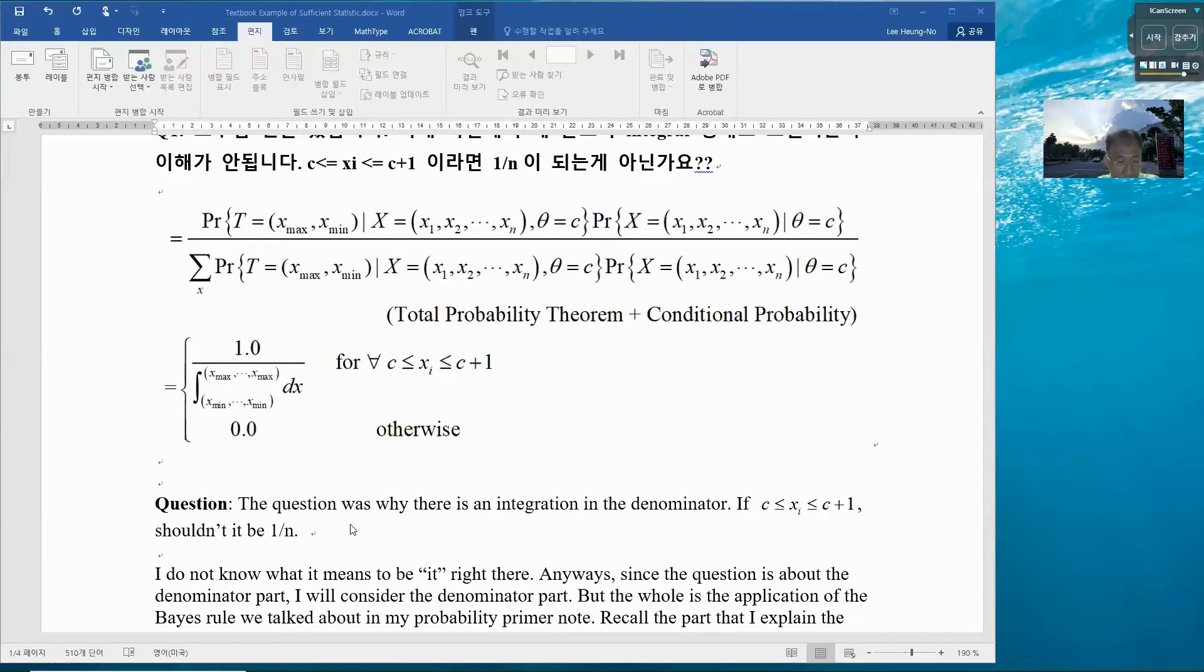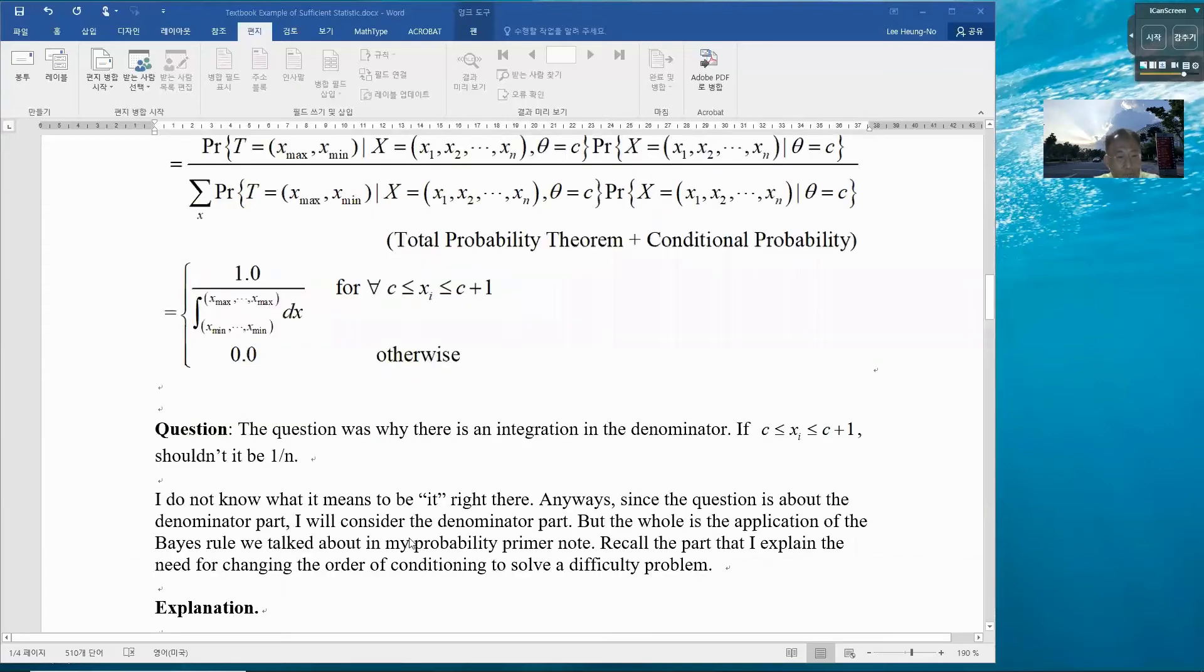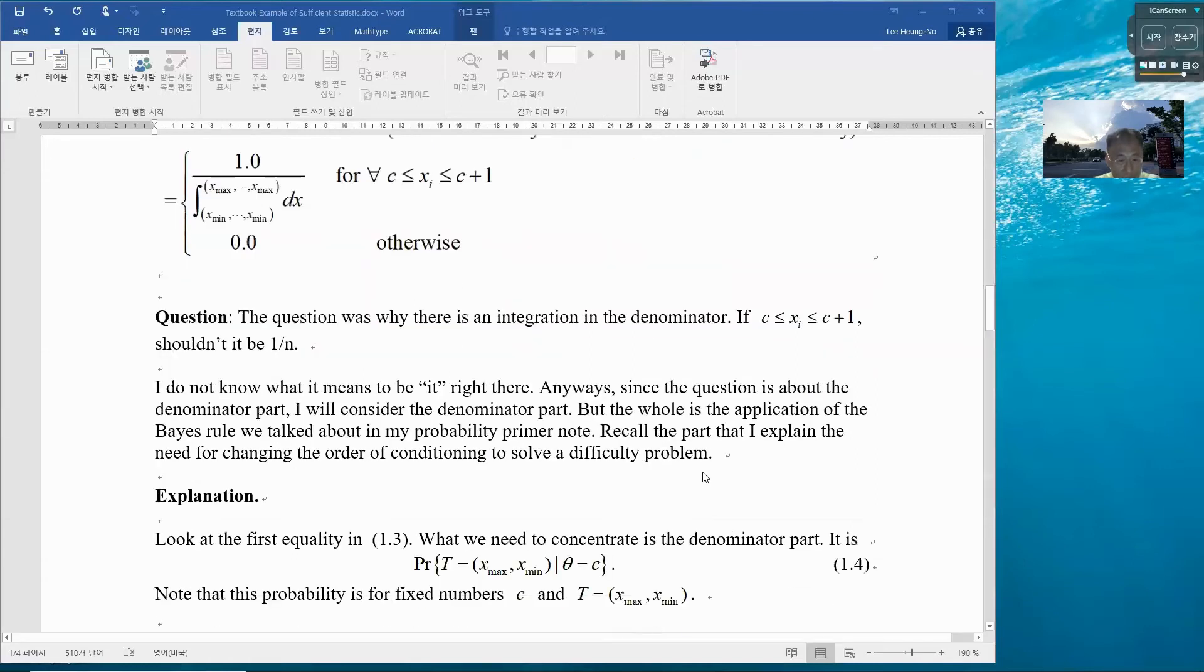I do not understand what he means by 'it' right here. Anyway, since the question is about the denominator part, I will consider the denominator part in this note. Basically, the whole thing is applying the Bayes rule to this problem that I have covered in my probability primer note. You may recall the part that I explained about the need for changing the order of conditionings to solve a difficult problem. This is one of such problems.